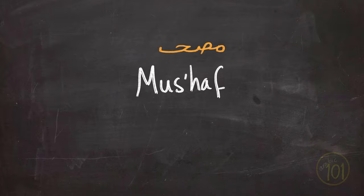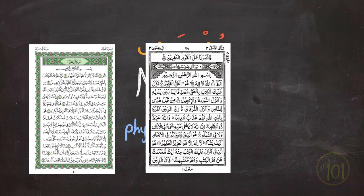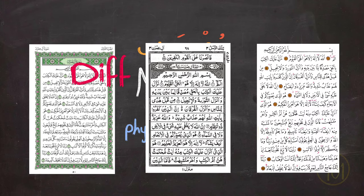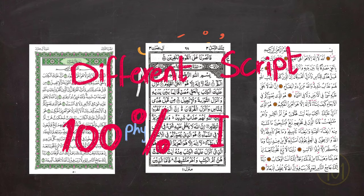The word Mus'haf is an Arabic word that refers to the physical copy of the Holy Quran. So there can be several publications written in different scripts, but they are all Quran and they are 100% identical in content.